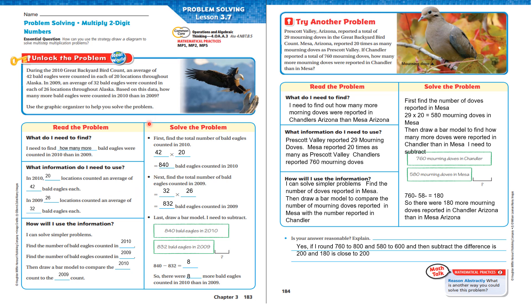Let's solve the problem. First, find the total number of bald eagles counted in 2010: 42 times 20 equals 840 bald eagles counted in 2010. Next, find the total number of bald eagles counted in 2009: 32 times 26 equals 832 bald eagles counted in 2009.